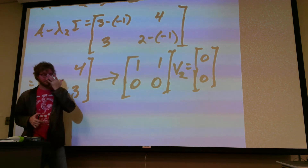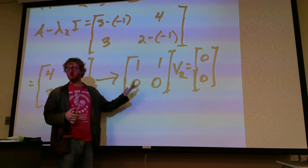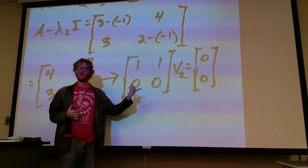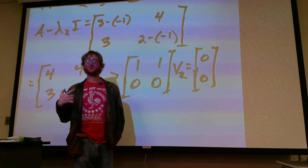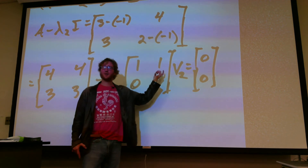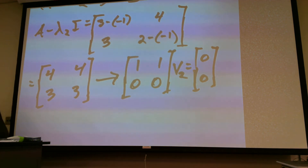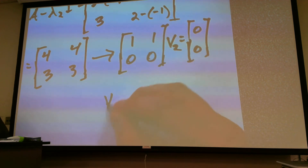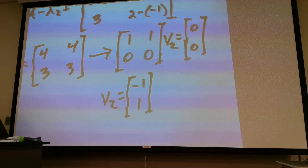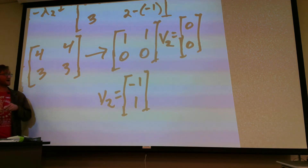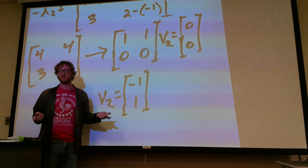This matrix must act on V2 to equal zero. x1 is the pivot, x2 is the free variable. The equation says x1 plus x2 equals 0, or x1 equals negative x2. So V2 equals [-1, 1]. If this matrix acts on [-1, 1], then 1 times negative 1 and 1 times positive 1 cancel each other out and it equals zero.